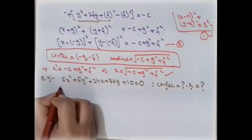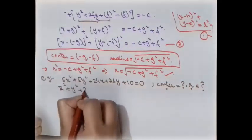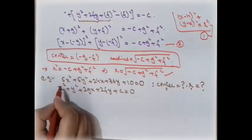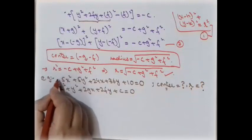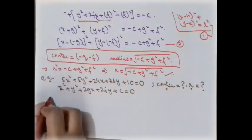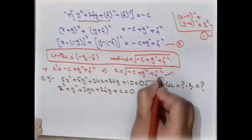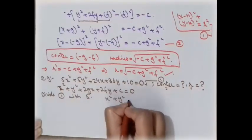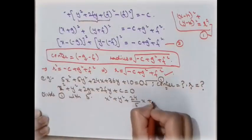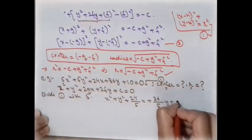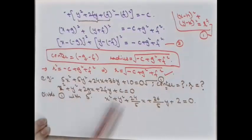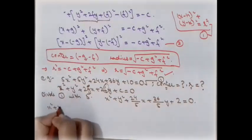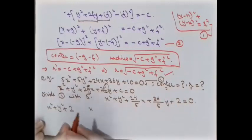Now let's work an example using the general form. Given the equation 5x² + 5y² + 24x + 36y + 10 = 0, we note that the coefficients of x² and y² must equal 1. So we divide the entire equation by 5, giving x² + y² + (24/5)x + (36/5)y + 2 = 0.